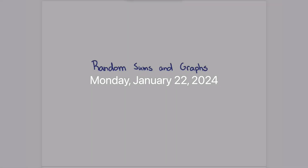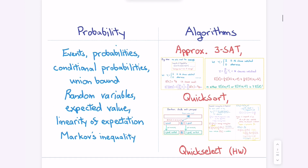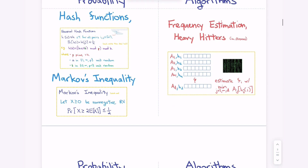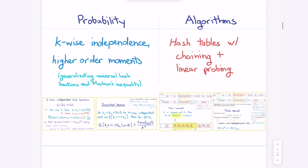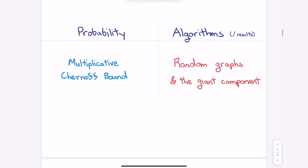Today we're talking about random sums in graphs, and we're going to see real concentration phenomena for the first time. We've done a lot — we used things like Markov's inequality, linear expectation, then Lovász's independence, getting more sophisticated with Galton-Watson processes. Today it's really about this giant component result, which is very interesting, but the big tool we're going to introduce is what's called a Chernoff bound.